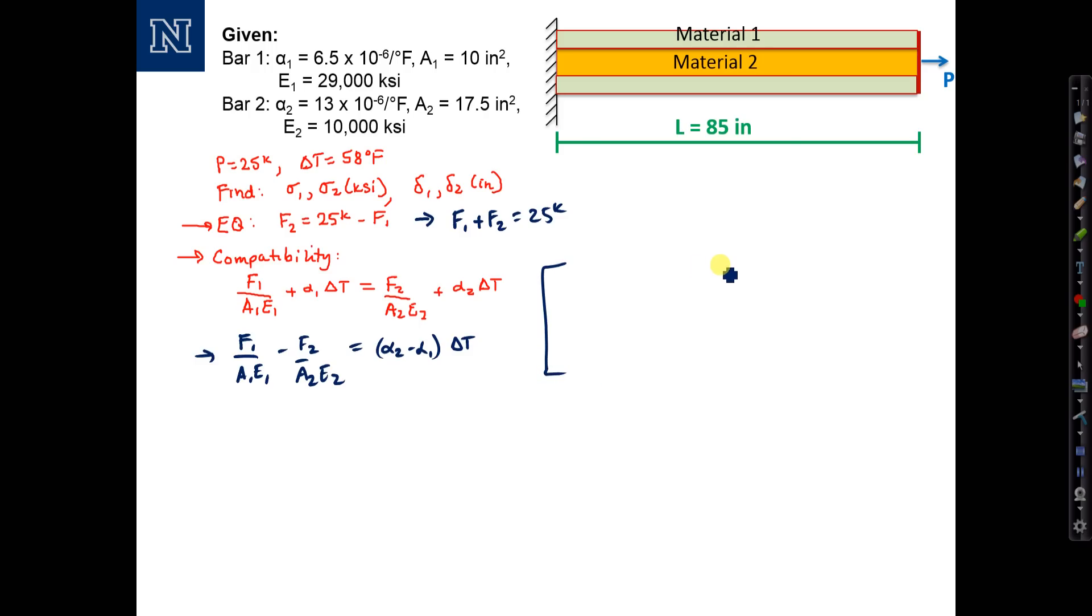Make a 2 by 2 matrix, a vector of unknowns F1 and F2, and the right-hand side. Going and substituting in for the first equation, we have 1 times F1 plus 1 times F2 equals 25 kips. The second equation: 1 over A1E1 times F1 minus 1 over A2E2 times F2 equals (alpha2 minus alpha1) times delta T. Now I'll go ahead and repeat this down here,